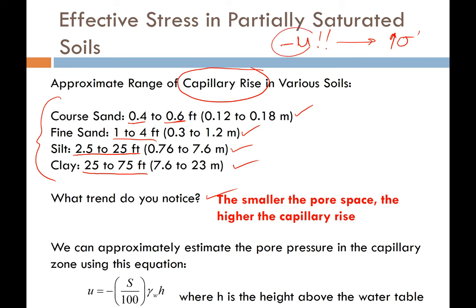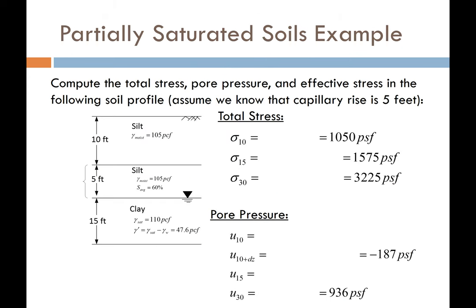To compute the negative pore pressure in the zone of capillary rise, we use the approximation: u = -(S/100) × γ_w × h, where S is the degree of saturation in percent, γ_w is the unit weight of water, and h is the height above the water table. Let's apply this to a three-layer soil problem where we want stresses and pore pressures at three different depths.